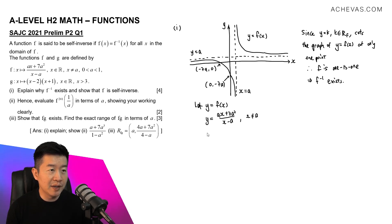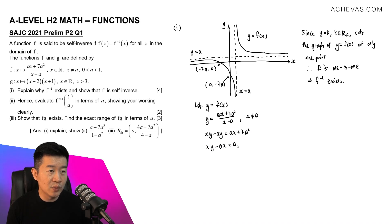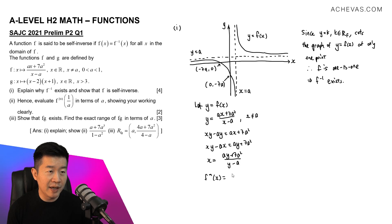We're going to make x the subject. Cross-multiplying gives xy minus ay equals ax plus 7a squared. Bringing terms over: xy minus ax equals ay plus 7a squared. So x equals (ay plus 7a squared) divided by (y minus a). This tells us that the f inverse expression, replacing all y by x, is ax plus 7a squared divided by x minus a — which is the same expression as f.